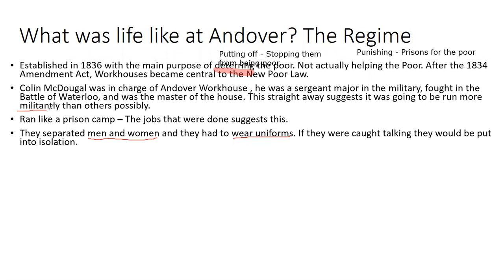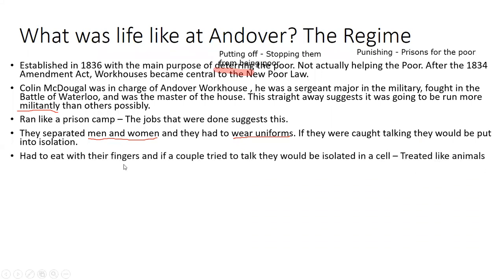If couples were caught talking they'd be put into isolation — once again that militancy of Colin McDougall causing real problems for the people there. Inmates had to eat with their fingers, meaning no basic hygiene, no knives and forks. This was going to cause more disease, especially when working in horrendous conditions. If a couple was caught talking they would be isolated. The best way to describe life at Andover was that people were treated like animals.